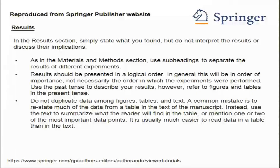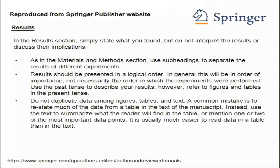A common mistake is to restate much of the data from the table in the text of the manuscript. If you start saying everything from the table again, it is a duplication. The table helps the reader understand better than narrating it in textual form. Therefore, use the text to summarize what the reader will find in the table, or mention one or two of the most important data points — highlight the trends, patterns, and major take home messages.